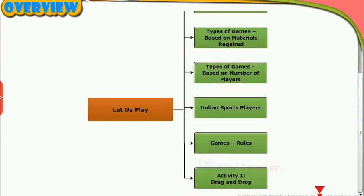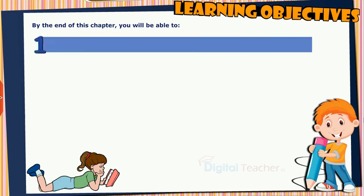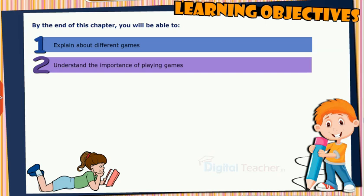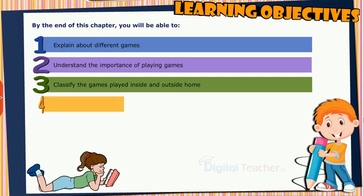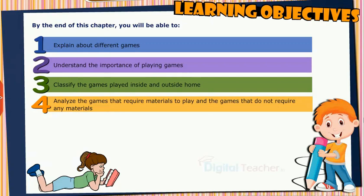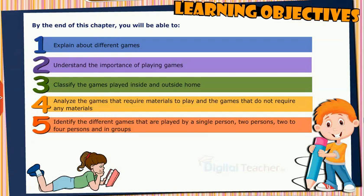By the end of this chapter you will be able to: explain about different games, understand the importance of playing games, classify the games played inside and outside home, analyze the games that require materials to play and the games that do not require any materials, and identify the different games that are played by a single person, two persons, two to four persons, and in groups.